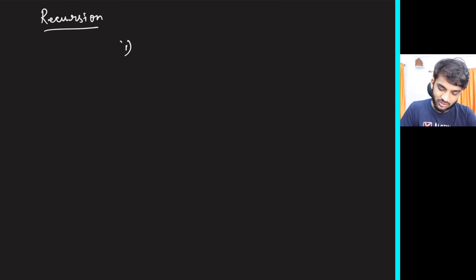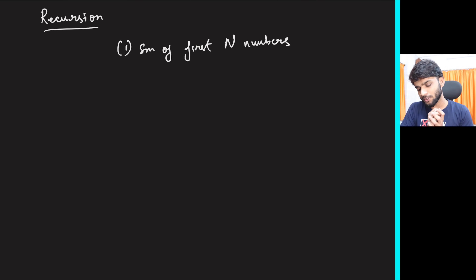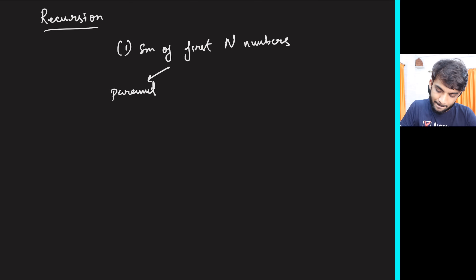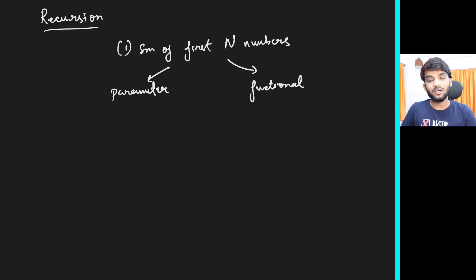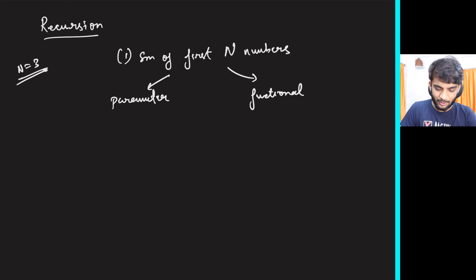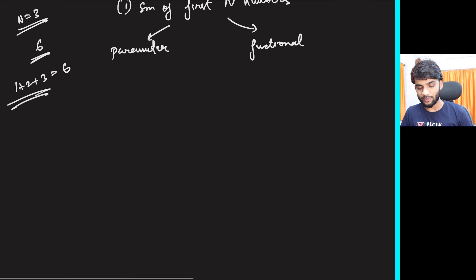Hey everyone, welcome back to the channel. Today we'll be solving a very interesting problem in recursion: the summation of the first N numbers. This can be done using a simple for loop, but we'll use recursion to build a strong base. I'll teach you two ways — the parameterized way, using a parameter to carry the result, and the functional way, where the function itself returns the answer. For example, if N is 3, the summation is 1+2+3 = 6.